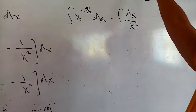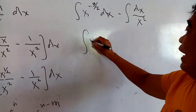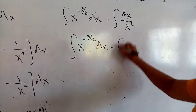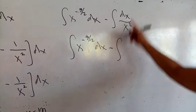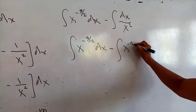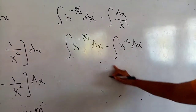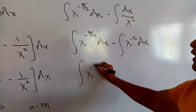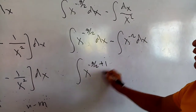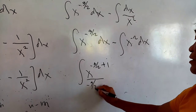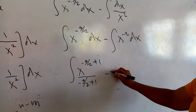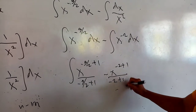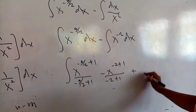Here we have to bring it up again — that would be x to the negative 3, multiplied by dx, minus the integral — bring it up — that would be x to the negative 2, times the differential dx. By the power integration formula: x raised to the negative 3 plus 1, divided by negative 3 plus 1, then minus x to the negative 2 plus 1, divided by negative 2 plus 1, plus the constant of integration c.